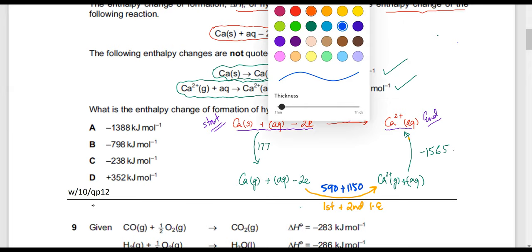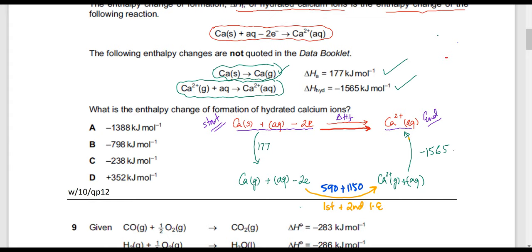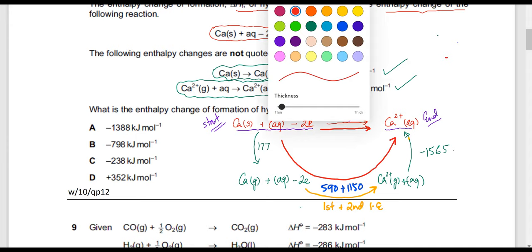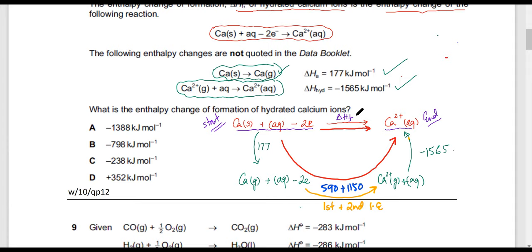The enthalpy changes of the two paths are going to be the same. This is path number one and this is path number two. That means delta Hf — the one we need to calculate — equals: going from start point to start to this point, then this point, then this point. It's going to be 177, then 590 plus 1150. Remember, if you're going along the arrows you don't have to change the sign. And the last one is minus 1565.